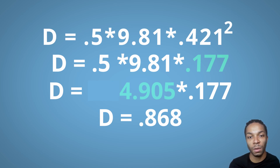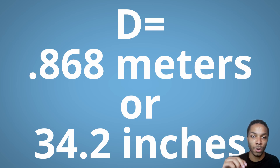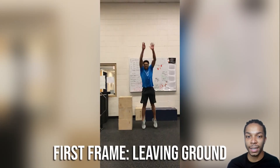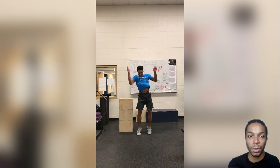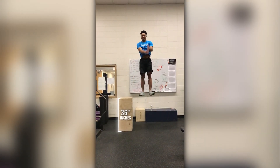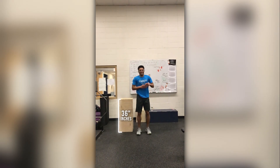This converts to a jump of about 34.2 inches. I follow a standard when measuring my vertical using frames: I take the first frame my toes leave the ground and the first frame when my toes touch back down. Consistency in your measurements makes your results more reliable, especially when comparing results to each other. Let me know if you think this is an accurate calculation — the boxes to my left were stacked up to 36 inches.